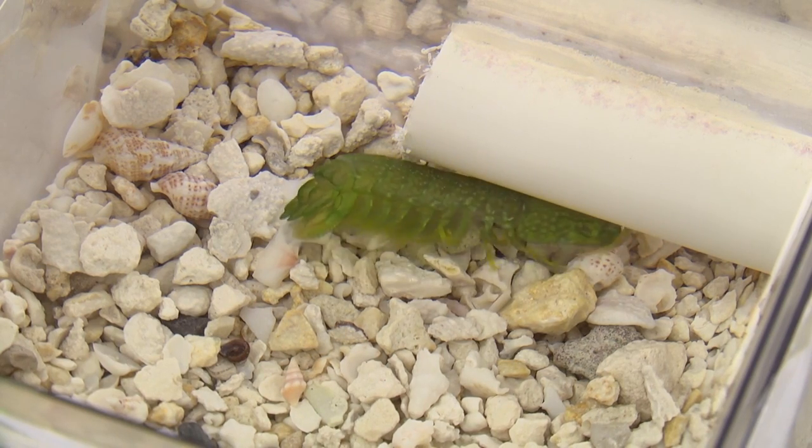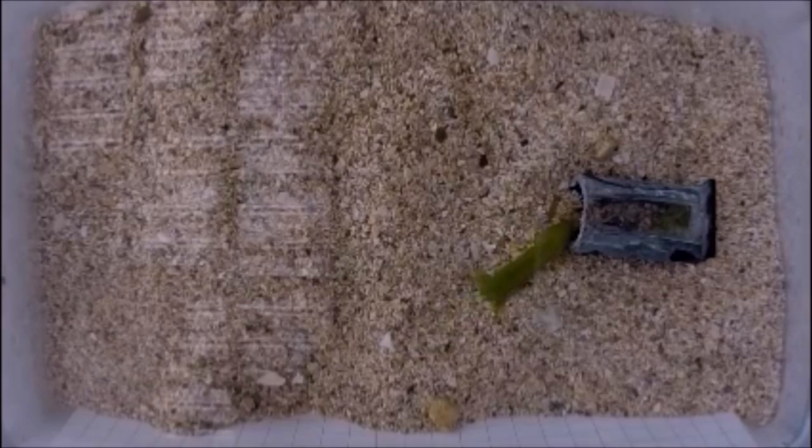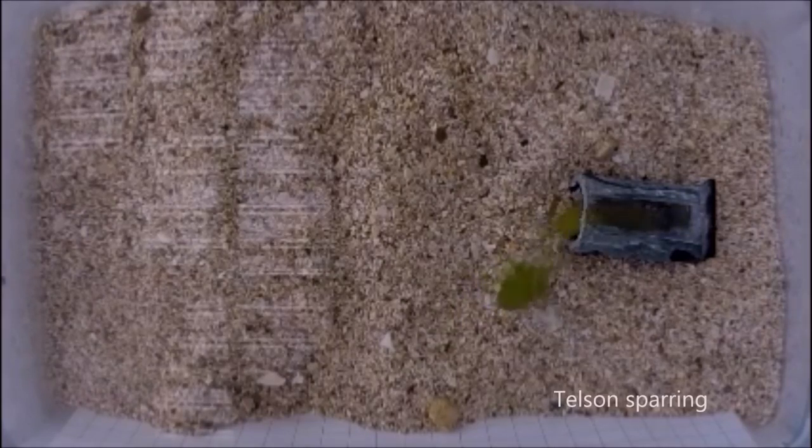To avoid injury, they strike each other in a very specific spot, a tail plate called a telson. This acts as a punching bag to absorb the tremendous energy.